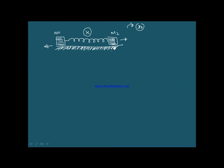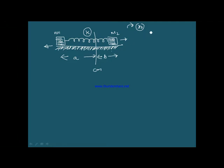For such problems, we know that once you have an extension and release it, there is no external force acting on the system. This system will always have a center of mass — any system has a center of mass. Let the center of mass be at a point such that this distance is a and this distance is b. From the property of center of mass, we know M1·a would be equal to M2·b — taking moments about the center of mass, both have to be equal.